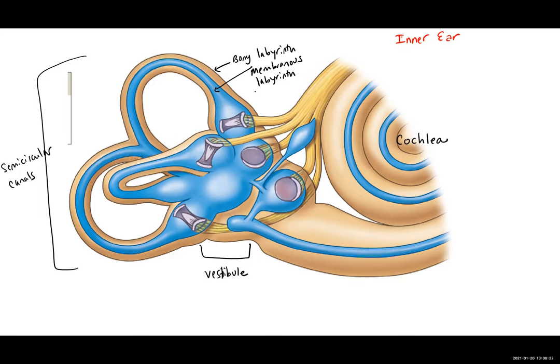The membranous labyrinth is full of the endolymph fluid, and the space between the bony and the membranous labyrinth is full of the perilymph.